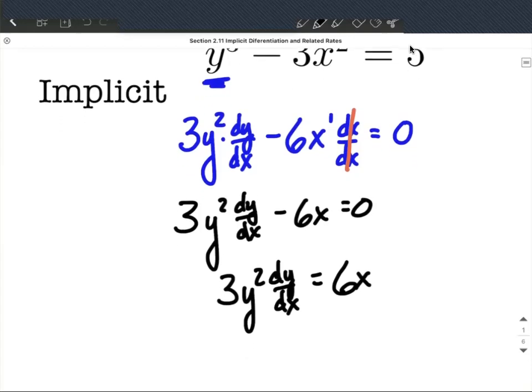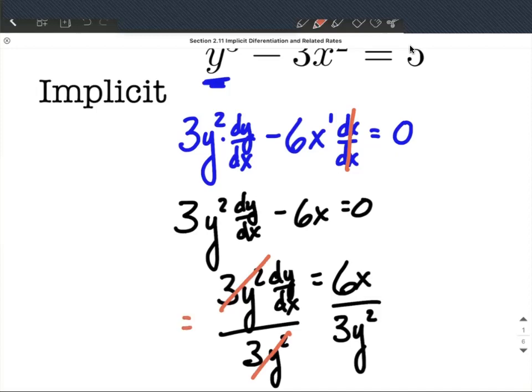And to isolate the dy/dx, we need to divide both sides by that 3y squared. On the left-hand side, by dividing by that, we're going to isolate the dy/dx.